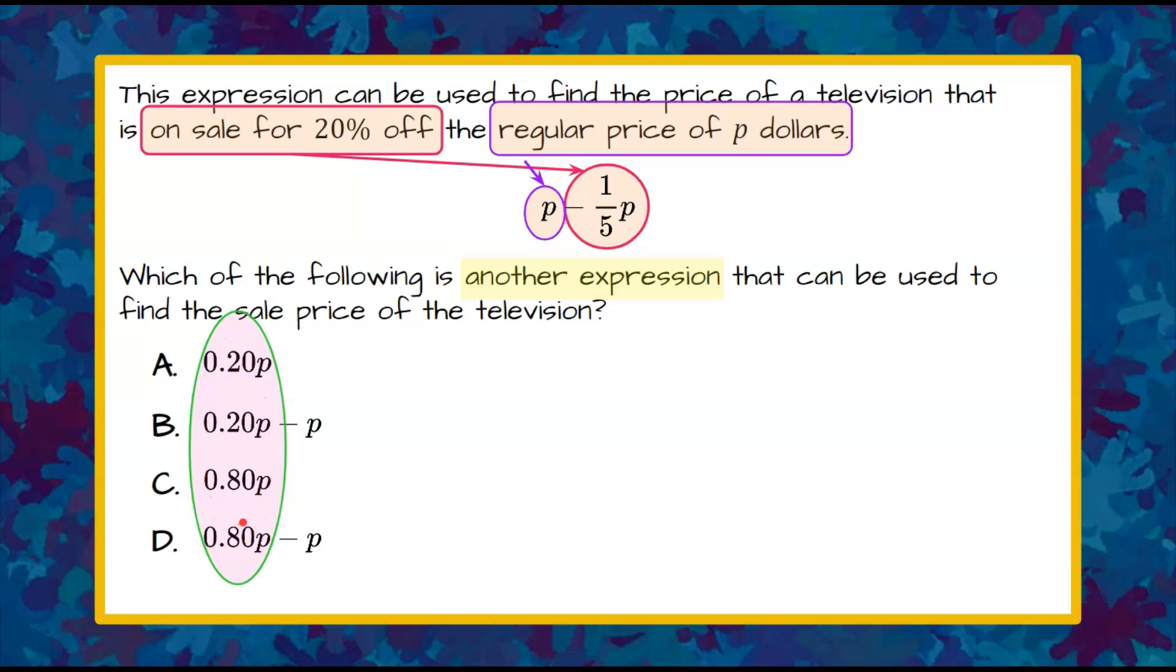Now we're going to rewrite this to understand that these are all in decimal form. So we're going to convert 1 fifth to a decimal. Which, when we rewrite this, is P subtract 1 fifth, written as a decimal, is 0.20 times P.